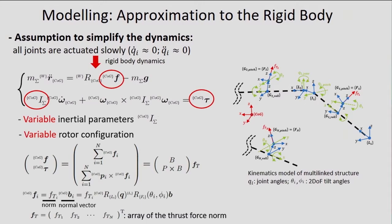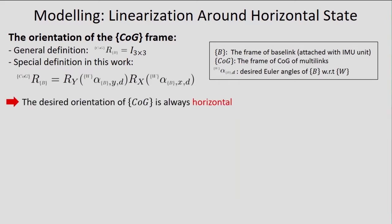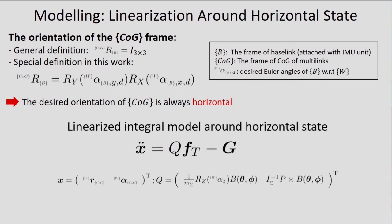As explained before, the drag moments and gyroscopic moments can be ignored, so the total wrench can be described easily. After the approximation, the linearization around the horizontal condition is performed. Generally, the orientation of the CoG frame is identical with the base link, which is attached with an IMU sensor. In this work, we define a spatial relationship between the CoG frame and the base link as shown in this equation, and this makes the desired orientation of the CoG frame always horizontal — while the desired orientation of other links can be arbitrary. Consequently, the linearized dynamics model regarding the CoG frame is available around the horizontal condition, which is very useful for the control method.